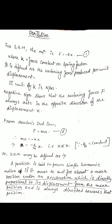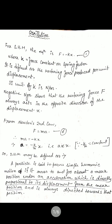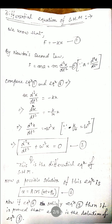Now the next topic is the differential equation of SHM. The normal equation is F equals minus k times x. In the calculus method, velocity is v equals dx by dt, and acceleration is dv by dt. To express acceleration in terms of displacement, we write a equals d²x by dt², the second derivative of displacement.